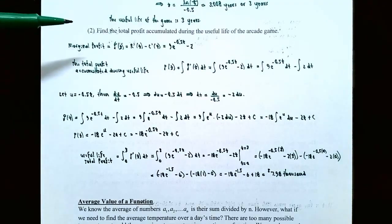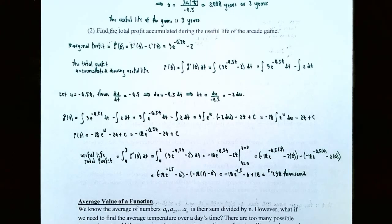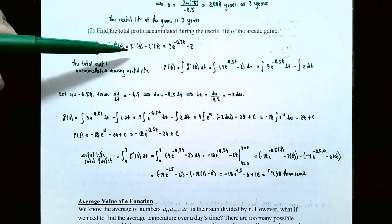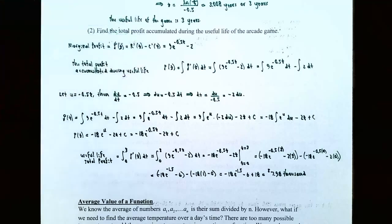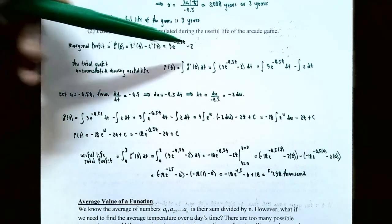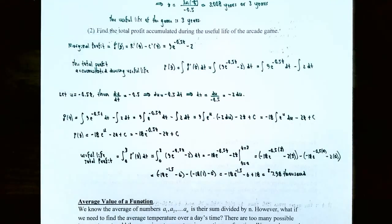Part two: find the total profit accumulated during the useful life of the arcade game. Since the useful life is three years, we need the antiderivative of the marginal profit function. The marginal profit P prime of t equals marginal revenue minus marginal cost: nine e to the negative 0.5t minus two. Finding the family of antiderivatives for this function gives us the profit function P of t.